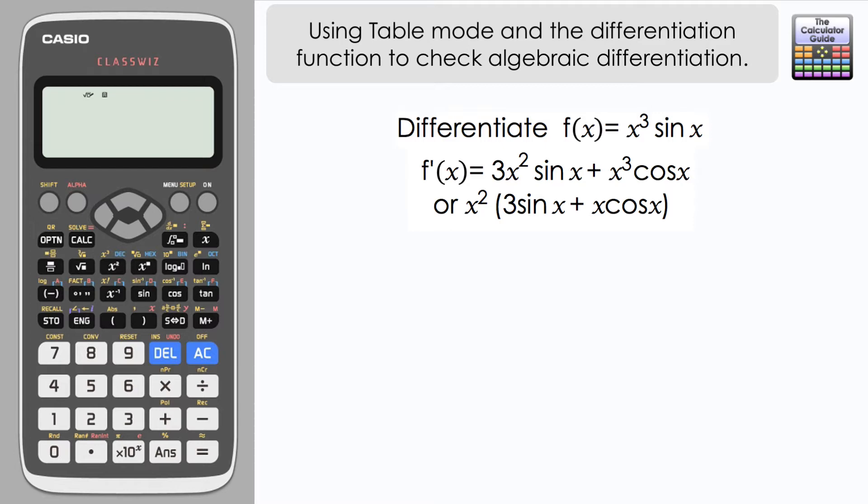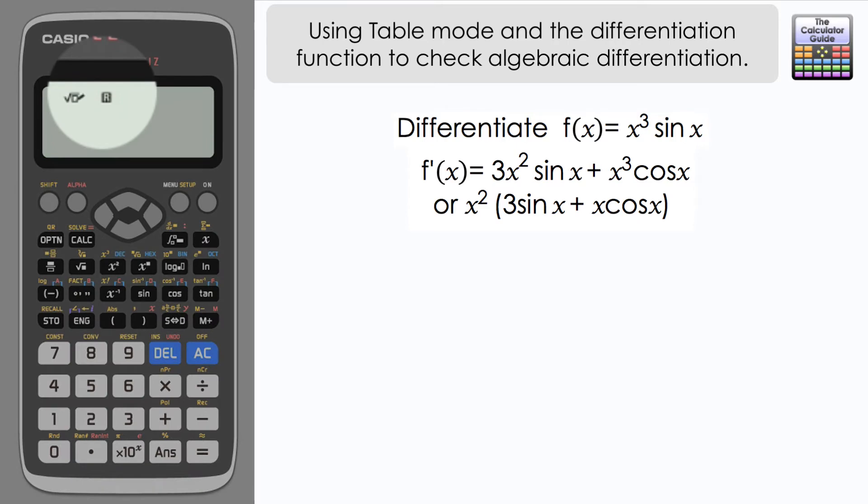Now just before I get started, I'm going to double check that I have the ClassWiz in radians. This is very important. If we use trigonometry with the differentiator, you're not going to get the correct results if you have your calculator in degrees. But we are in radians.